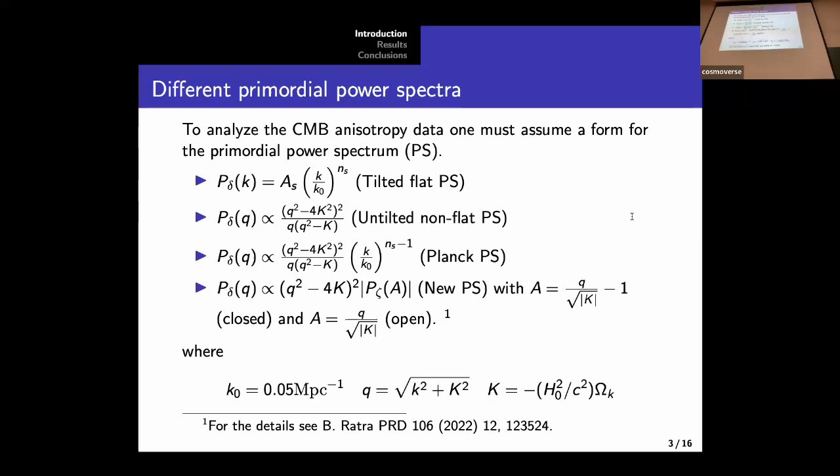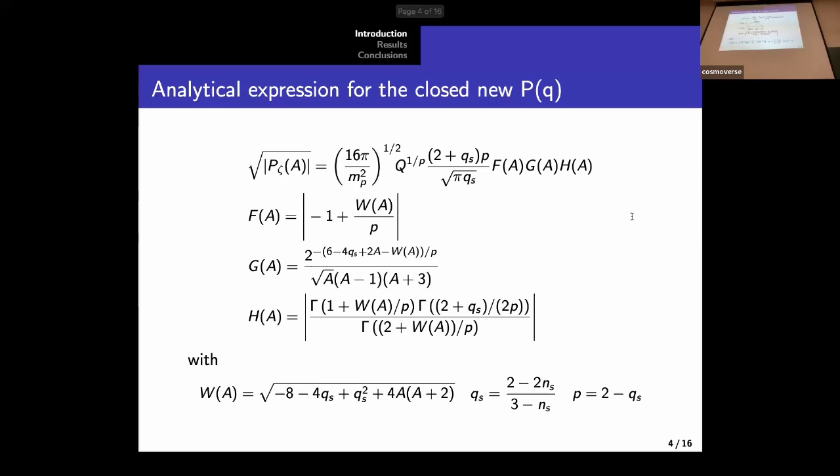And finally, we have this new power spectrum, which, I mean, the function A varies because it is an expression depending on if we want to consider a closed or an open universe. We shall see in a moment the expression, the analytical expression for this power spectrum, which is theoretically motivated. All of the power spectrums are renormalized in such a way that when the wave number is equal to the pivot scale, we will recover the amplitude for the primordial power spectrum.